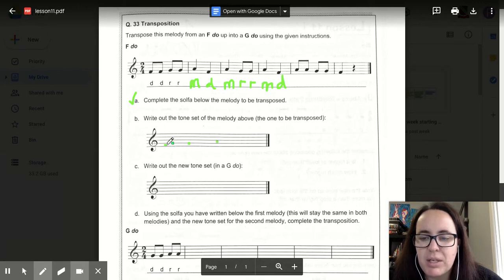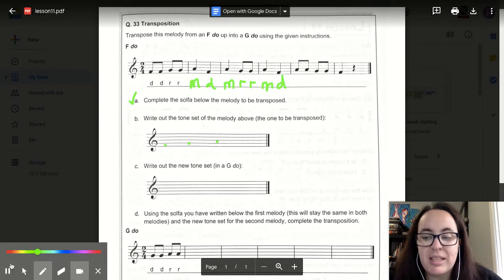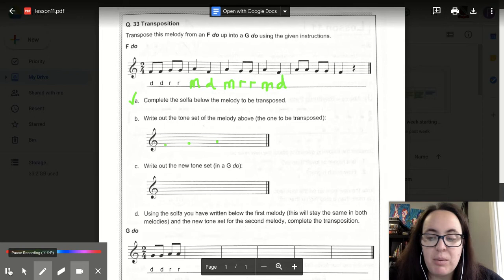Once you've written them, make sure you do your stems. And you could write DO, RE, and ME underneath the stave. Pause the video now and do that for me.